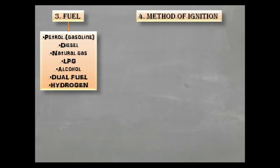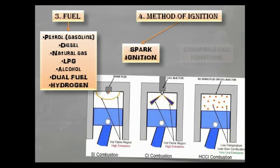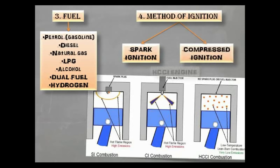Fourth is based on method of ignition. Based on method of ignition, an internal combustion engine can be classified as spark ignition engine (SI engine), compressed ignition (CI engine) and homogenous charged compression ignition engine (HCCI engine). Now, SI engine uses spark plug and CI engine don't.